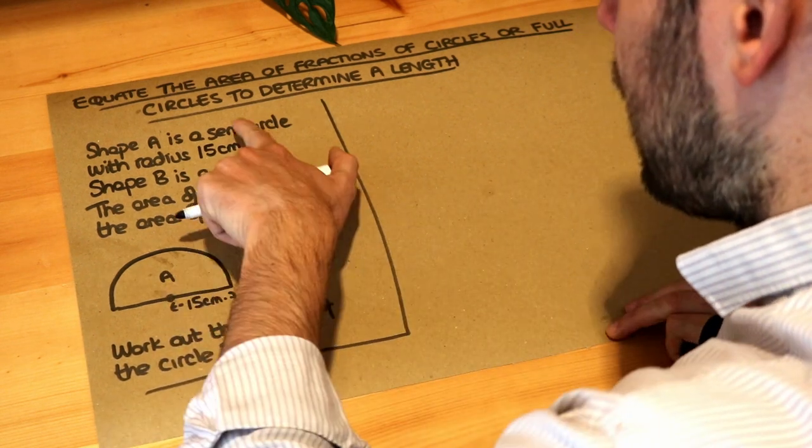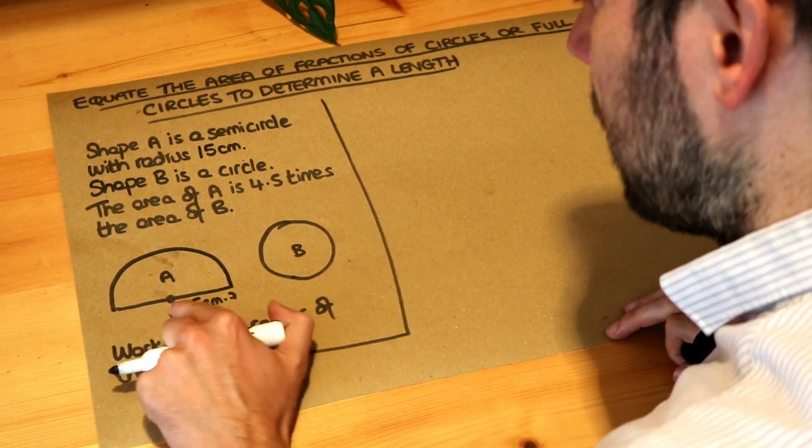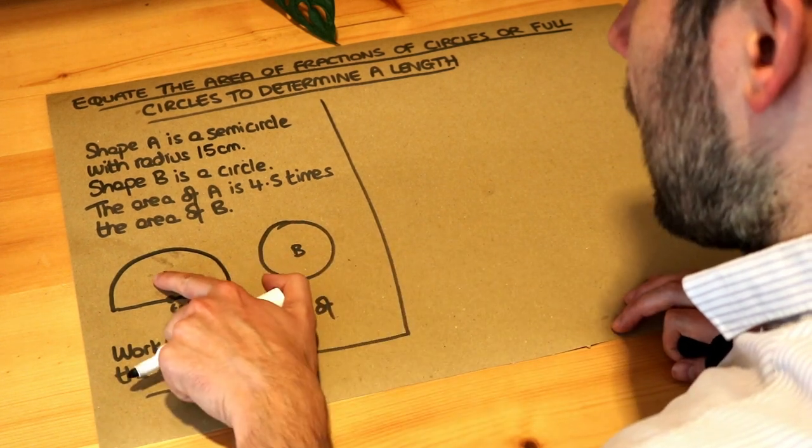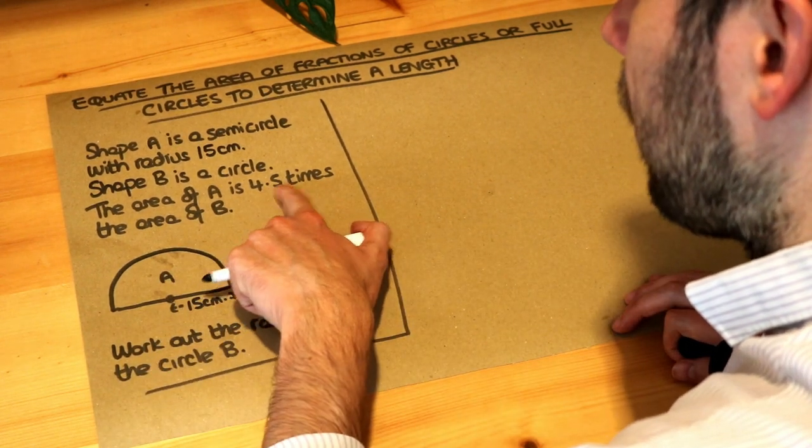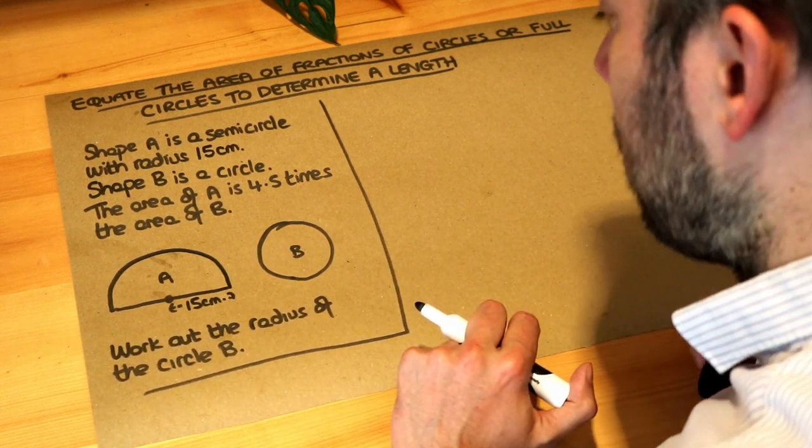Shape A here is a semicircle, half a circle, with radius 15 centimeters as we can see. Shape B is a circle. The area of A is four and a half, 4.5 times the area of B. Work out the radius of the circle B.